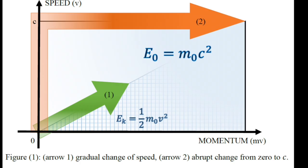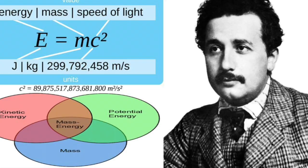Before Einstein, mass and energy were thought to be distinct and unrelated. This formula unified them, fundamentally changing our understanding of the universe. It laid the groundwork for modern physics, including quantum mechanics and cosmology.